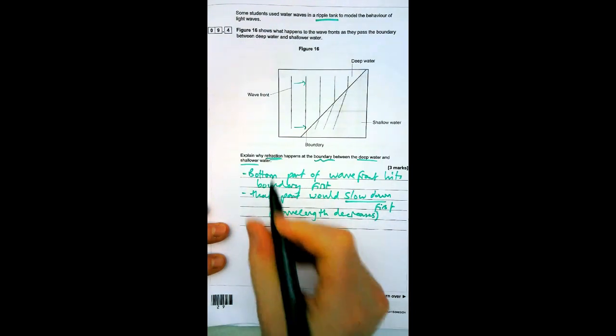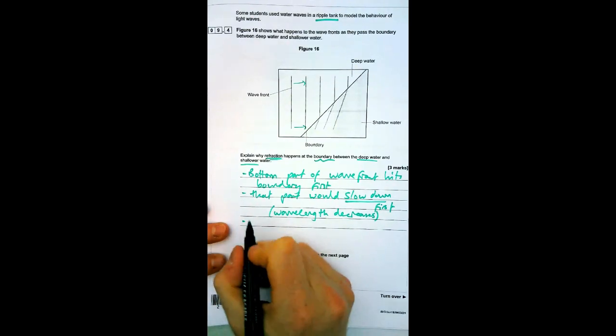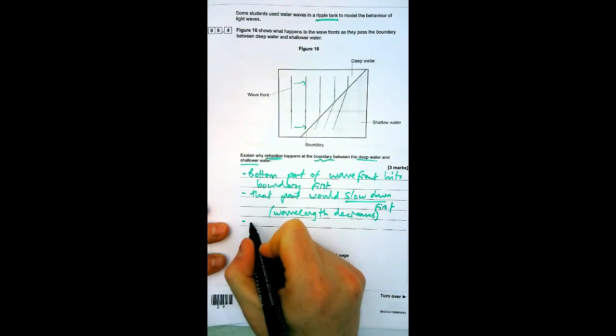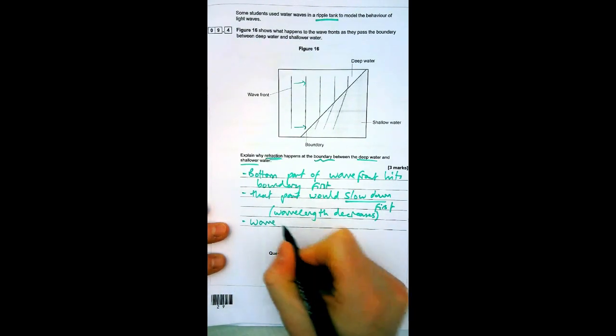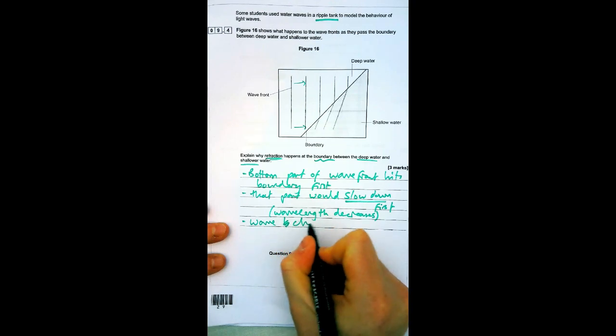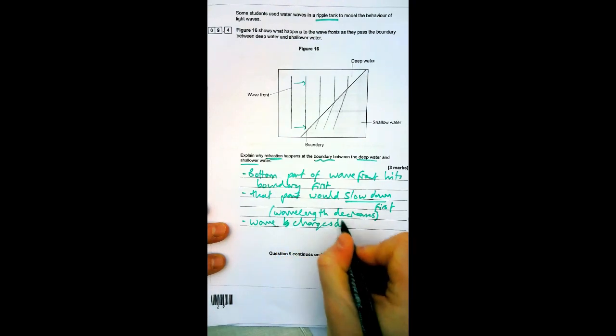The question hasn't actually told us what refraction is, so that's a clue. It would slow down first, meaning the wave bends or changes direction toward the normal.